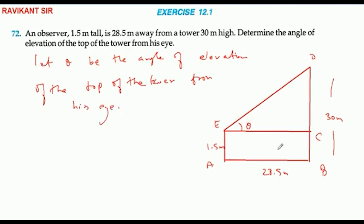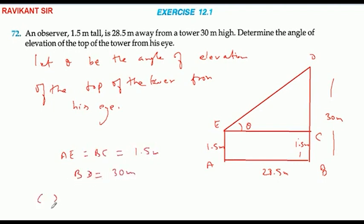The observer's height is 1.5 meter, so A E equals B C equals 1.5 meter. The tower height is 30 meters. The effective vertical height for the angle is 30 minus 1.5.